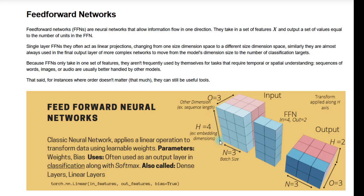Our second dimension is the H dimension, our embedding dimension or hidden dimension, whatever you want to call it. It corresponds to the representation of the data for one particular item in our batch. So this vertical block here corresponds to all of the data we would have for one part of one of our examples in the batch. The last dimension I'm leaving as an example of any other dimension you might have in your problem, because feedforward networks usually only apply to one dimension at a time.